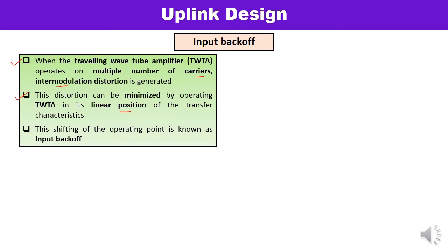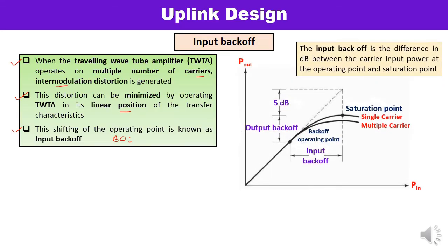This shifting of the operating point is known as input backoff, denoted by BOI. In the diagram, the x-axis shows input power and the y-axis shows output power. You can see input backoff, output backoff, and a saturation point. The operating point is also marked. There are two reference curves — one for single carrier and one for multiple carriers. The shift from one point to another represents the input backoff, i.e., the shifting of the operating point.